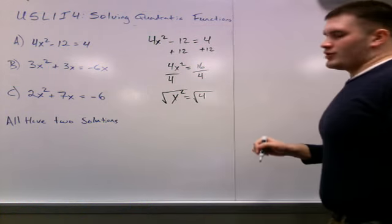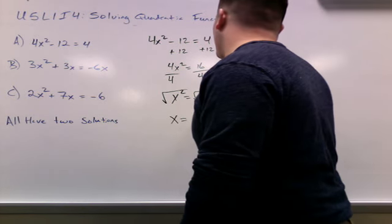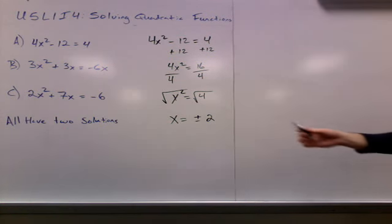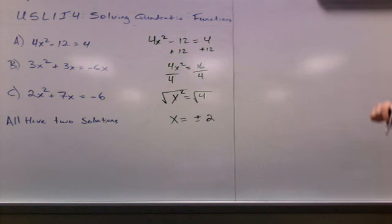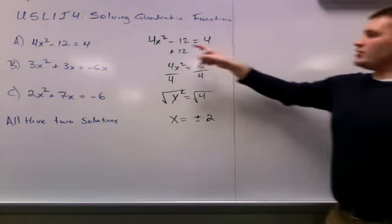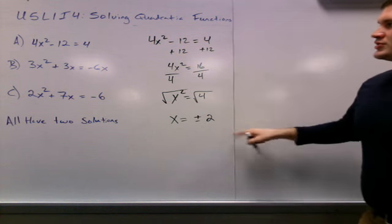So, by square root of 4, we get plus or minus 2. So, our two solutions, one is positive 2, the other one is negative 2. So, when there is only one x term, we can use algebra.